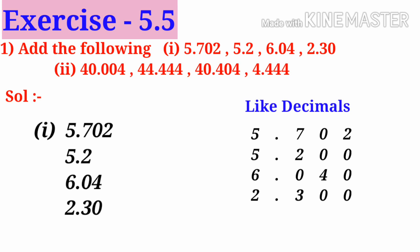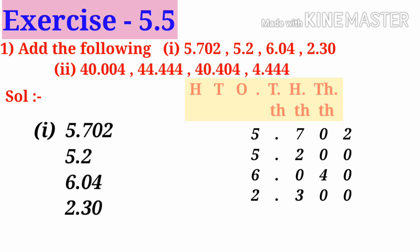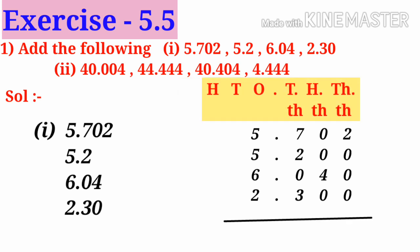Now place all these decimal fractions into their exact place values. Add in the thousandths place: 2 plus 0 plus 0 plus 0 is 2, then 4. In the hundredths place: 7 plus 2 plus 3 is 12, write 2 carry 1. In the tenths place: 5 plus 5 plus 6 plus 2 plus 1 is 19. So the answer is 19.242.